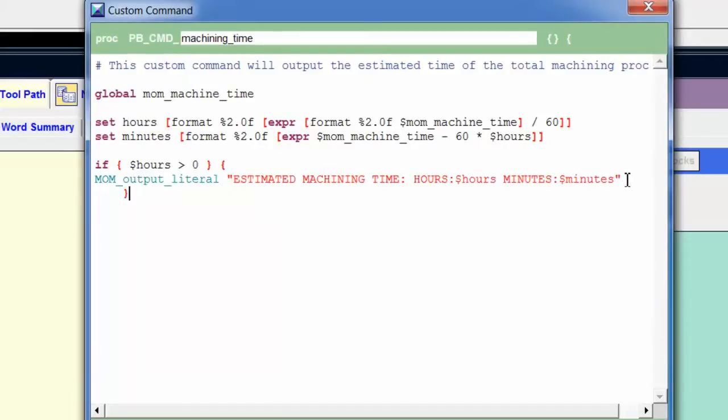So what do we do if hours are not greater than zero? Well, we still want to output minutes. So I'll use my else command. Opening curly brace, go to the next line.